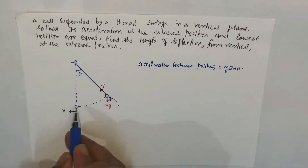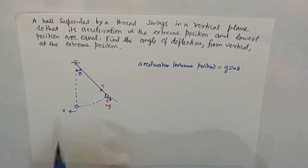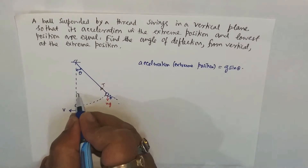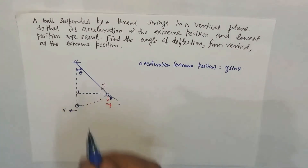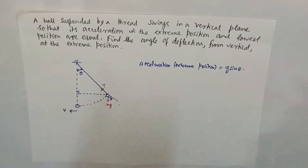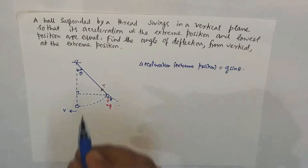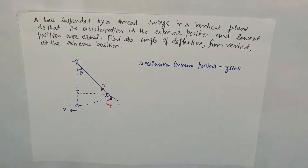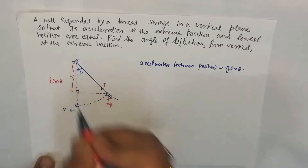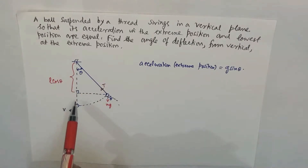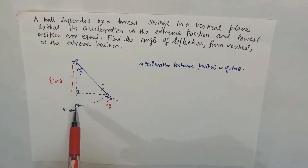When the particle passes through the lowest position it has some velocity v. We find this using energy conservation. Drawing a perpendicular, if the length of the thread is L, then this vertical projection is L cos theta. The remaining portion is L minus L cos theta, which is the height of the extreme position above the lowest point.